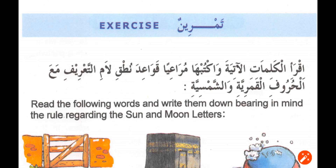Iqra'il kalimahatul aathiyati waktubha mura'iyan qawa'ida nuthki laamut ta'reef mahal huruful kamariyya wash-shamsiyya — Read the following words and write them down, bearing in mind the rules regarding the sun and moon letters.